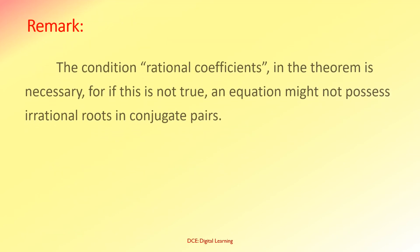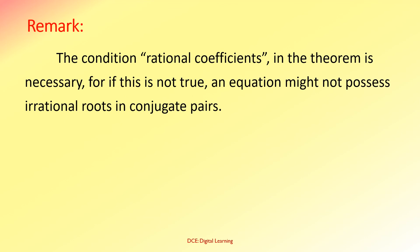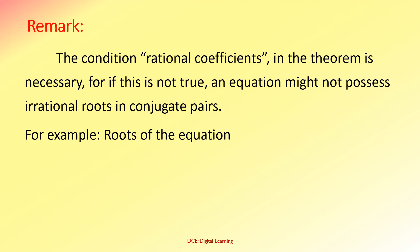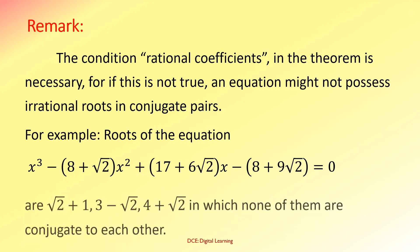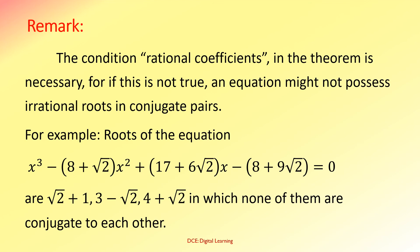Remark: the condition of rational coefficients in the theorem is necessary. For if this is not true, an equation might not possess irrational roots in conjugate pairs. For example, the roots of the equation x³−(8+√2)x²+(17+6√2)x−(8+9√2)=0 are √2+1, 3−√2, and 4+√2, in which none of them are conjugate to each other.